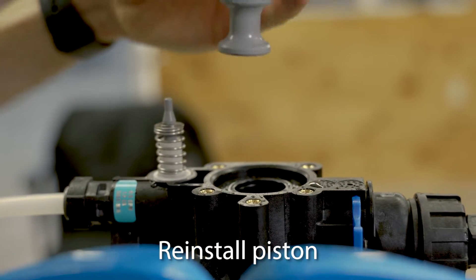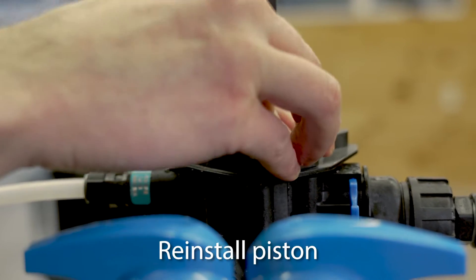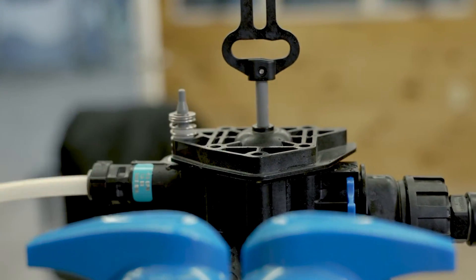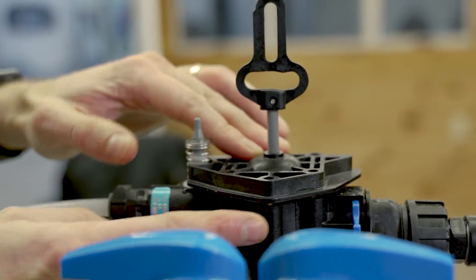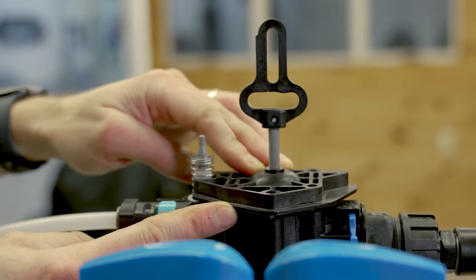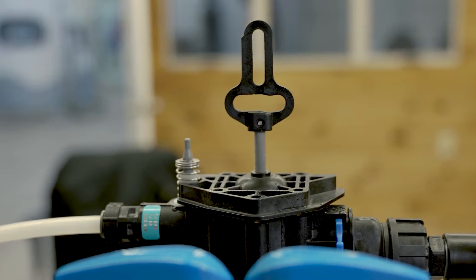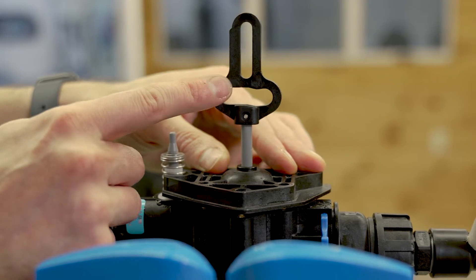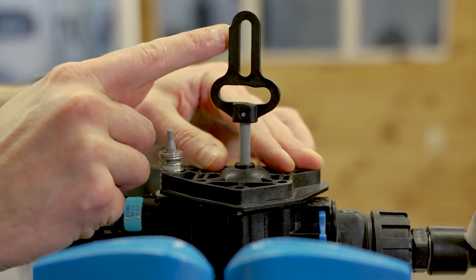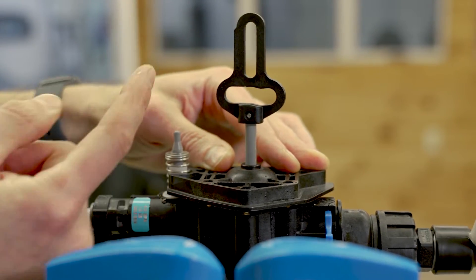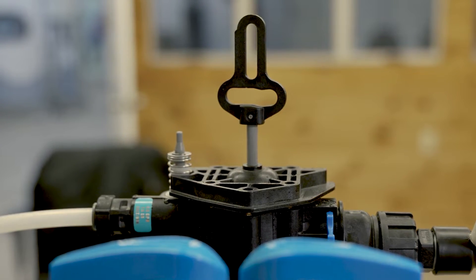We can now put the piston in and just push it down by the end plug plate. It'll sit just a little bit above the valve body; that's okay, it's going to compress when we tighten those screws down. You do want to make sure that the piston has this notch at the top facing this direction towards the inlet side of the unit.